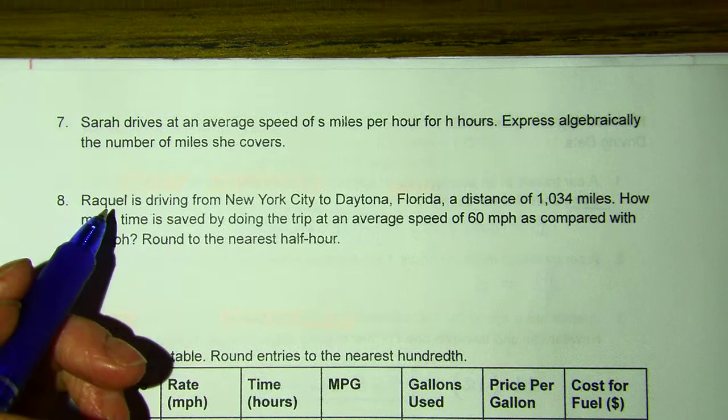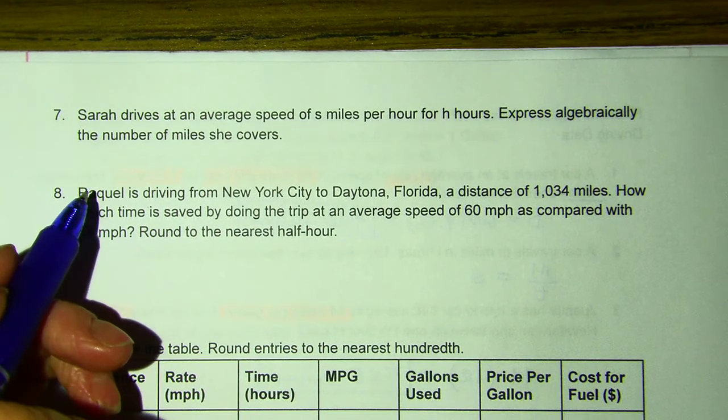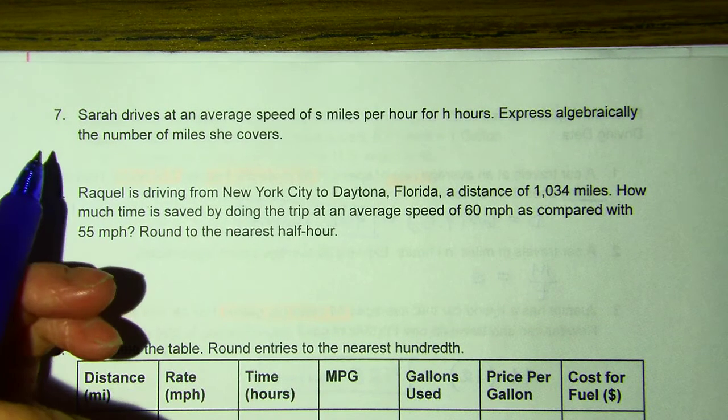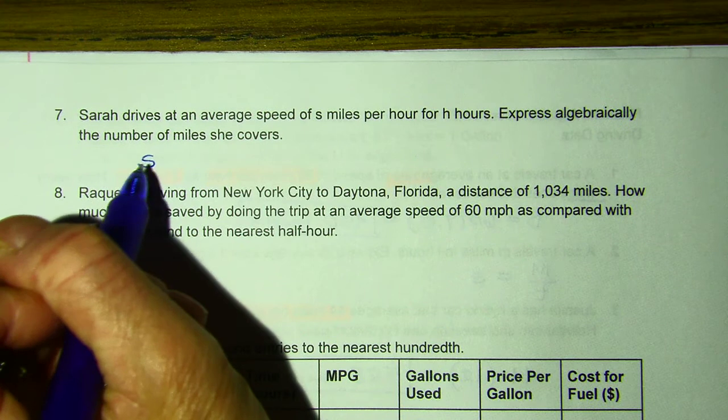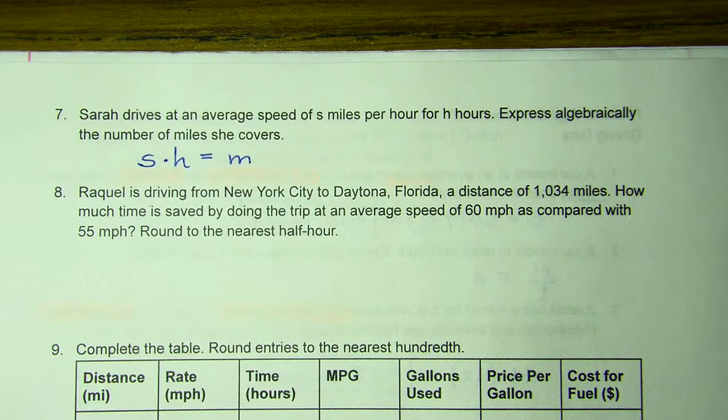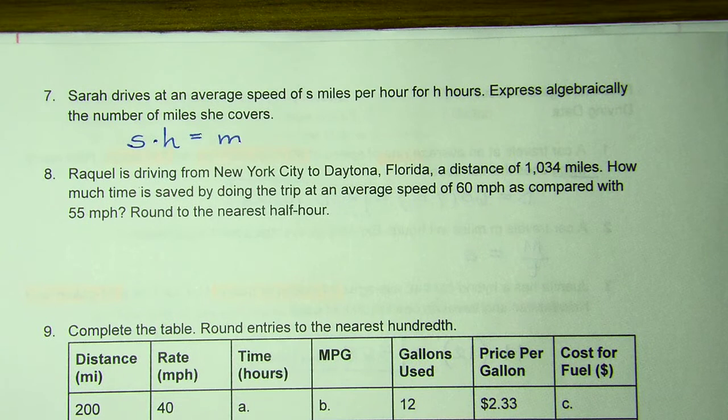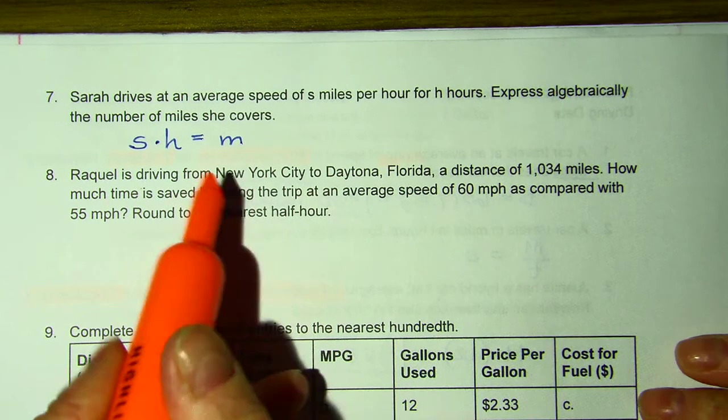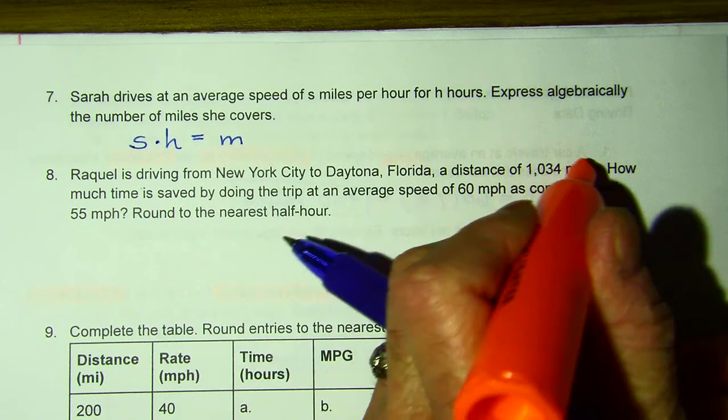So number seven. Sarah drives an average speed of S miles per hour for H hours. So S times H would give her the number of miles she covers. So let's apply that here. Raquel is driving from New York City to Daytona, Florida. Here's her distance.